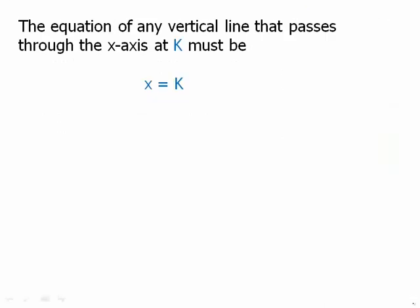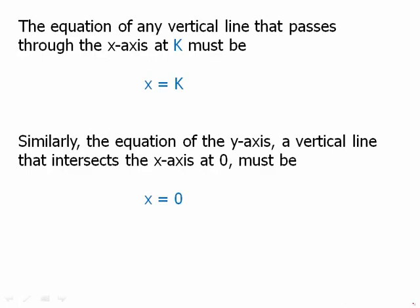The equation of any vertical line that passes through the x-axis at k must be x = k. Similarly, the equation of the y-axis, a vertical line that intersects the x-axis at 0, must be x = 0.